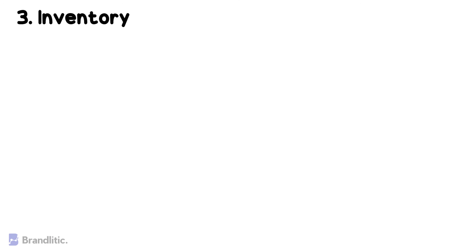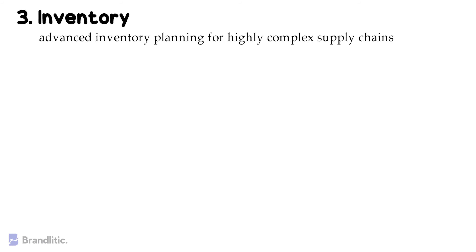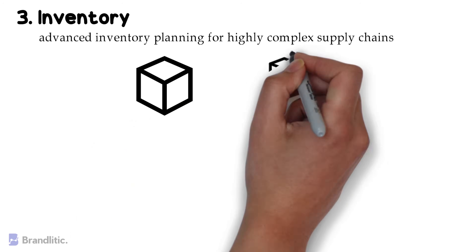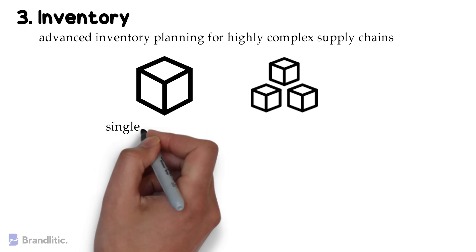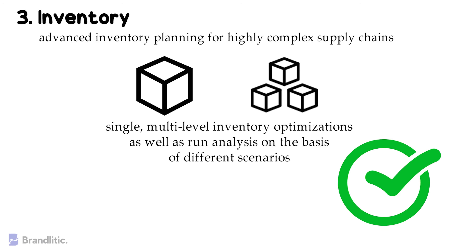The third component is Inventory. SAP IBP for inventory assists in advanced inventory planning for highly complex supply chains. Planners can easily perform single-level and multi-level inventory optimizations, as well as run analysis on the basis of different scenarios. This further helps in standardized inventory target settings at each level of the supply chain.